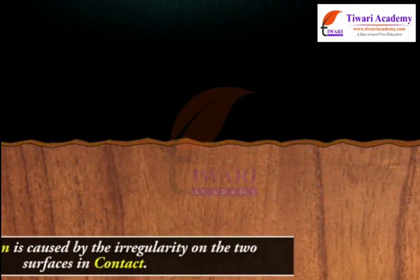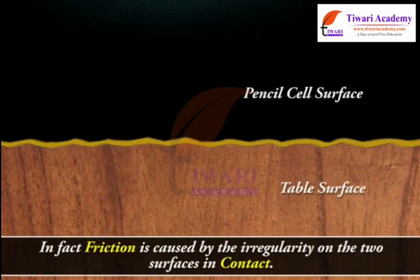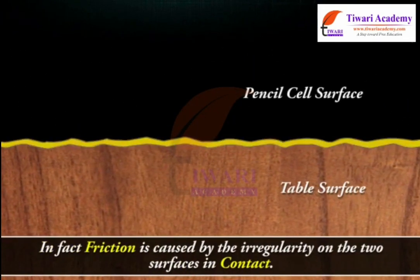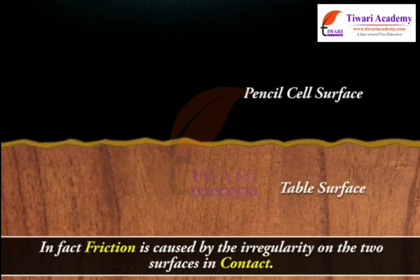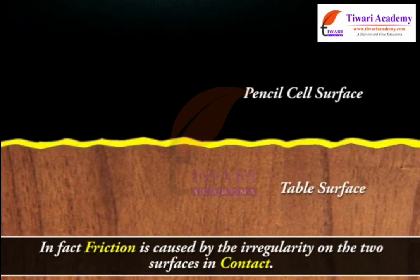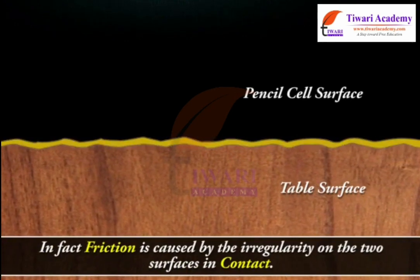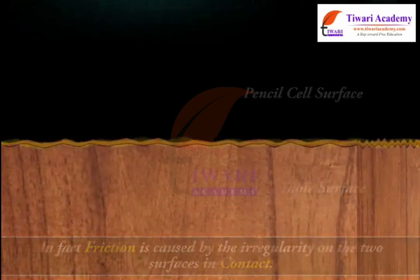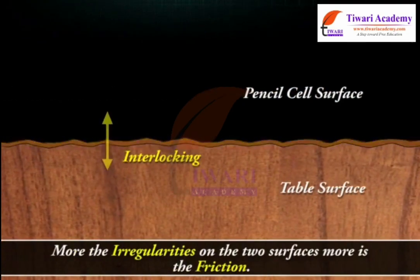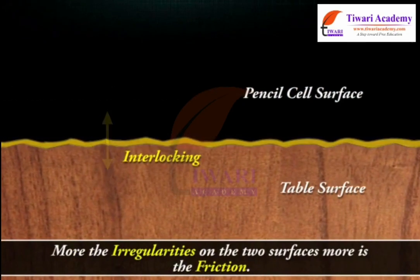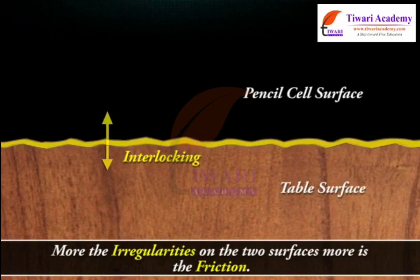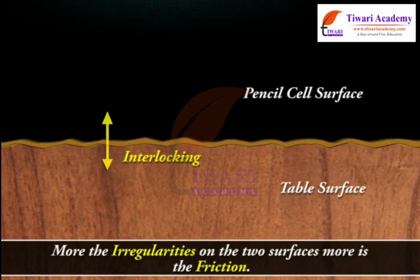In fact, friction is caused by irregularities on the two surfaces in contact. The more the irregularities on the two surfaces, the more is the friction.